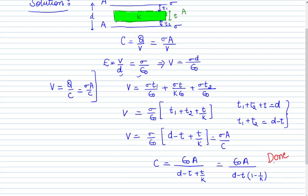The key approach: divide the space into regions by medium type, write the voltage for each region using E = σ/ε₀, then sum them and substitute back into the capacitance formula. This gives the final result C = ε₀A / [d − t(1 − 1/K)].